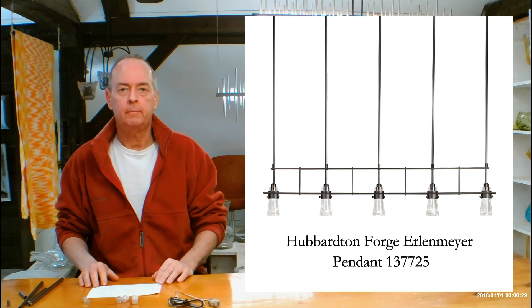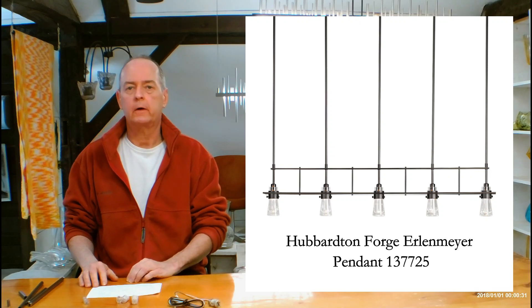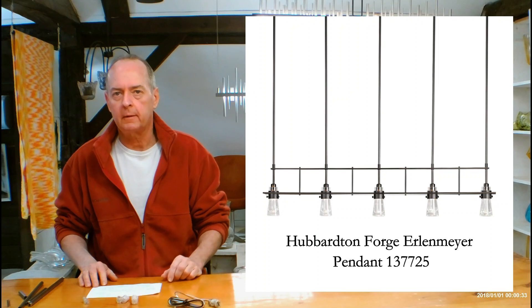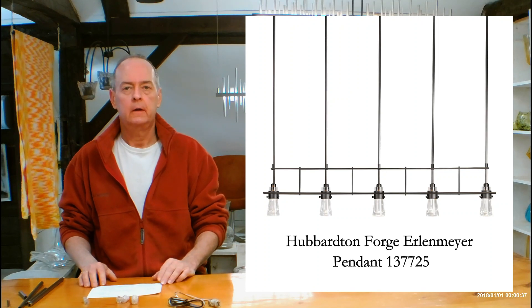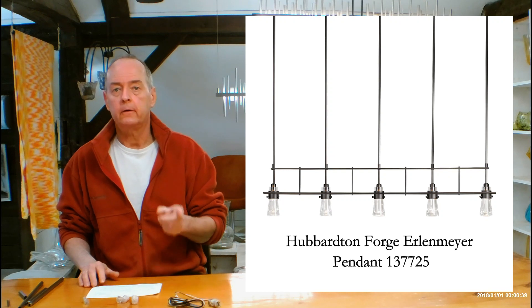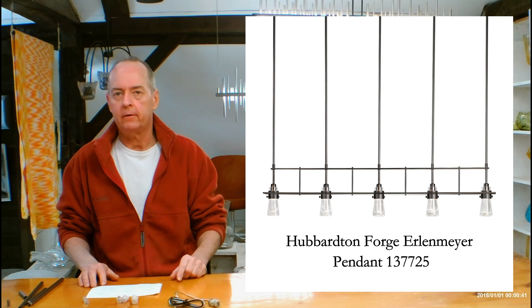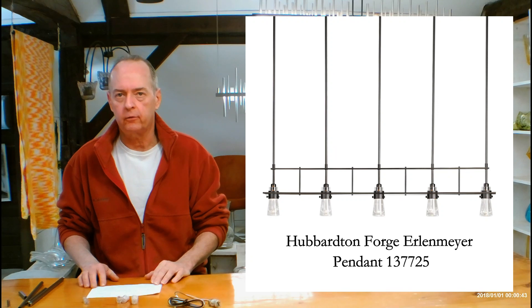Hi, I'm Christopher Dunnigan, this is handmadeinvermont.com, and today we're talking about the Hubberton Forge Erlenmeyer 5 Light Pendant. This is the 137725. There's also some excellent interior and exterior sconces that match this as well as singular pendants, so check them out if you get a chance.